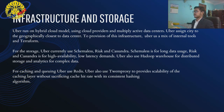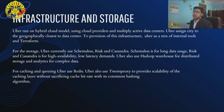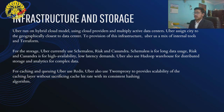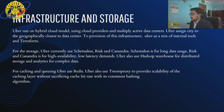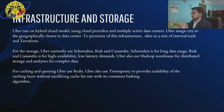For infrastructure provisioning, Uber uses a mix of internal tools and Terraform. For storage, Uber currently uses Schemaless, Riak, and Cassandra — Schemaless is for long data usage, while Riak and Cassandra are for high availability and low latency demands. Uber also uses a Hadoop warehouse for distributed storage and analytics for complex data. For caching and queuing, Uber uses Redis and TwemProxy to provide scalability of the caching layer without sacrificing cache hit rate.